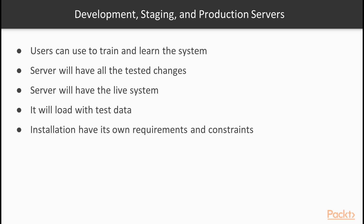The staging server will typically have all the tested changes and functionality of the live system but will be loaded with test data and configurations that are useful for training. Each installation will have its own requirements and constraints. What is important is that you make these decisions early on in your Odoo configurations so that you can properly administer the installations all the way from development into production.